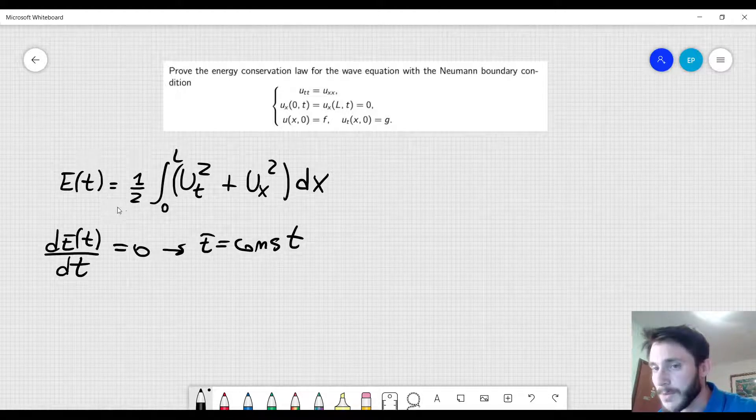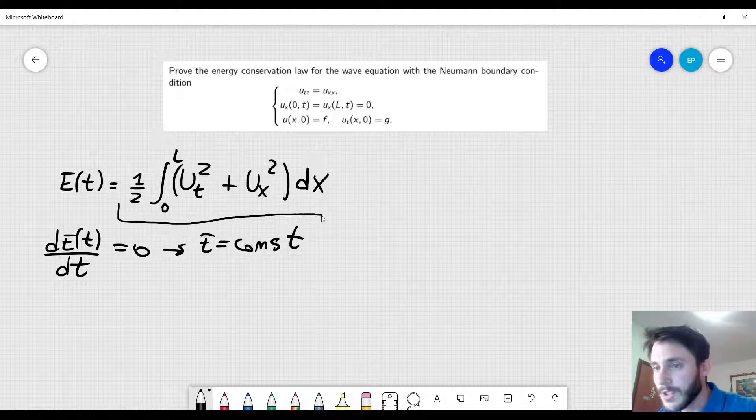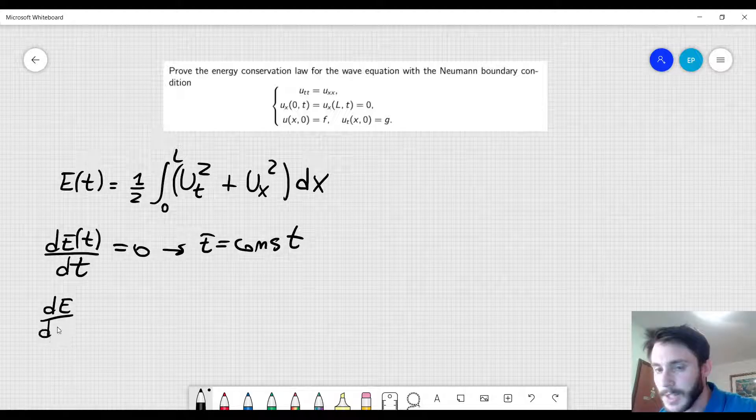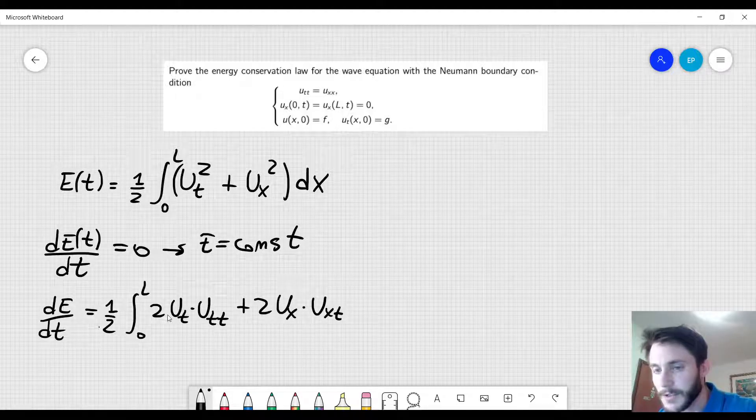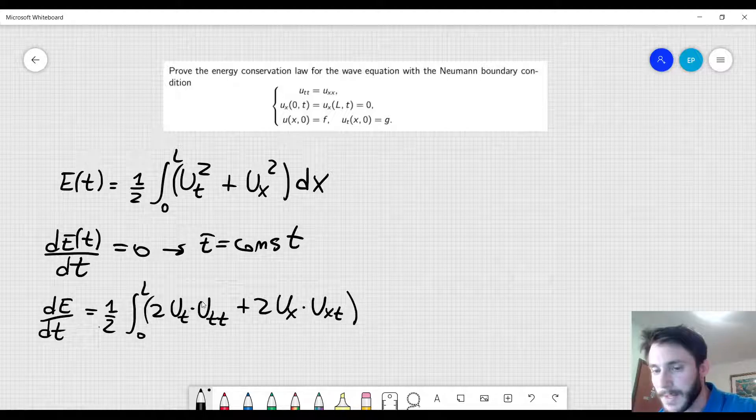And how to show that? We have to consider the wave equation and also this formula here. So we have to take the derivative of that d/dt will be equal to 1/2 integral from 0 to L of 2u_t times u_tt plus 2u_x times u_xt. So I have taken the derivative with respect to time of these functions here inside the integral.